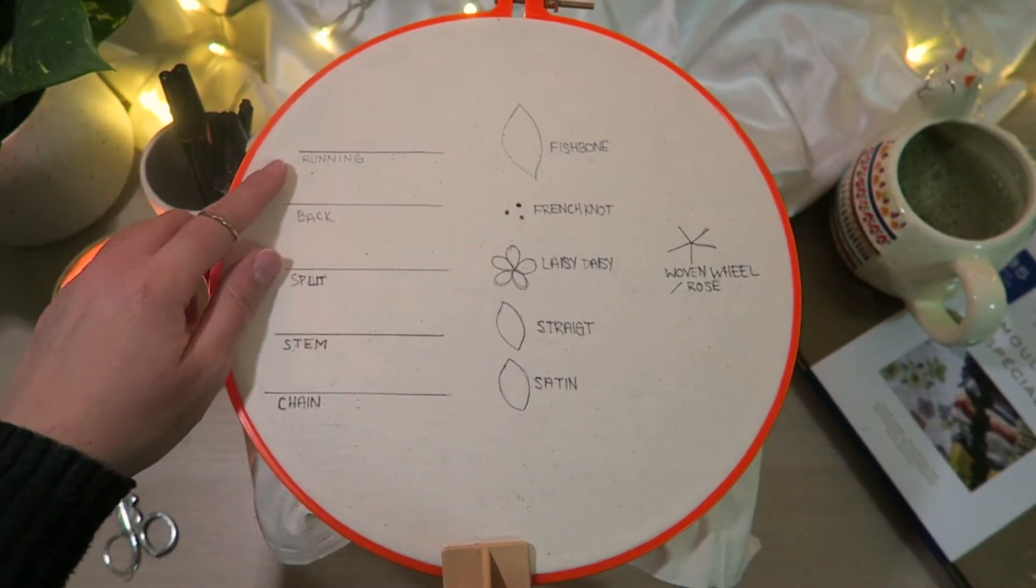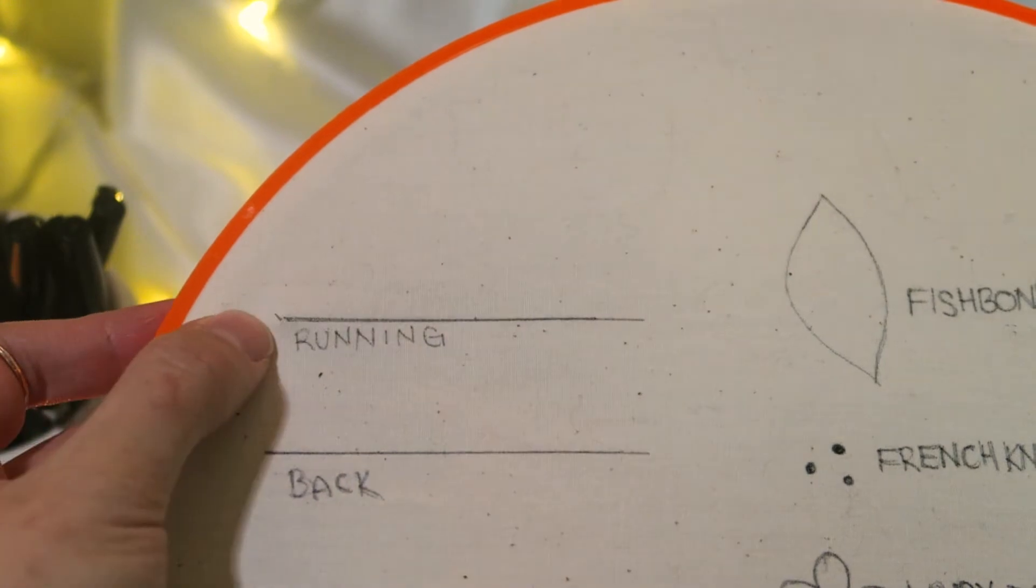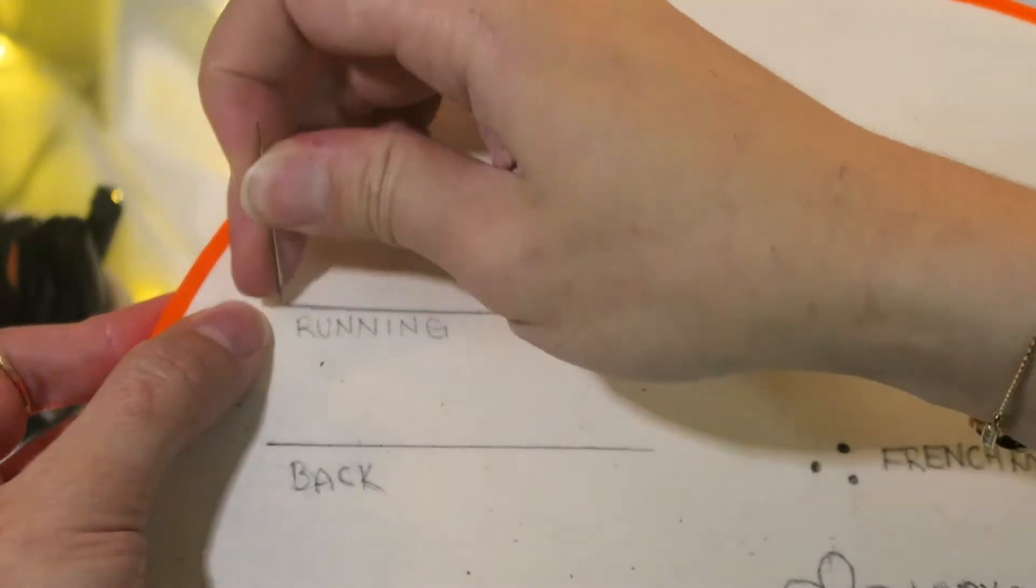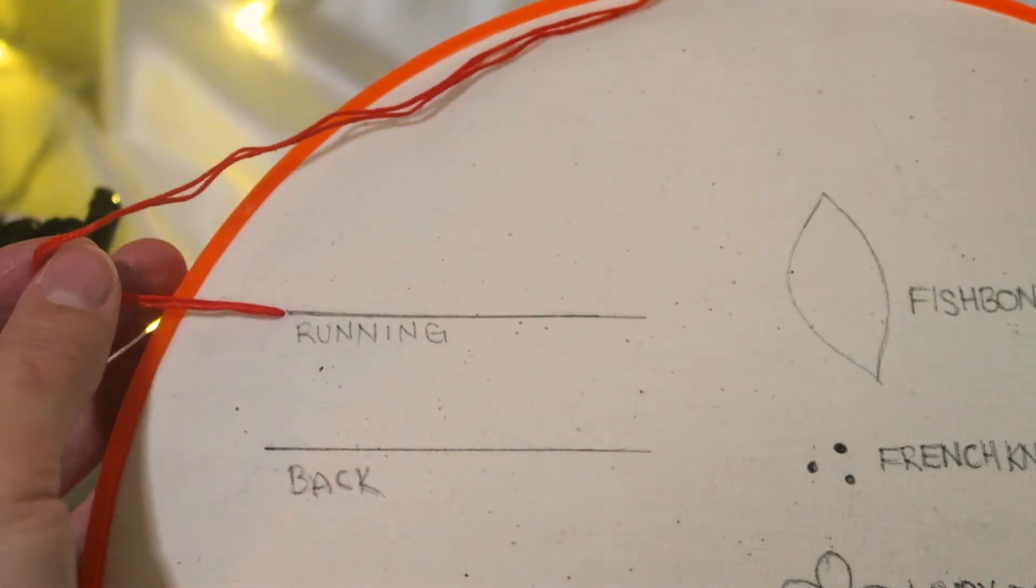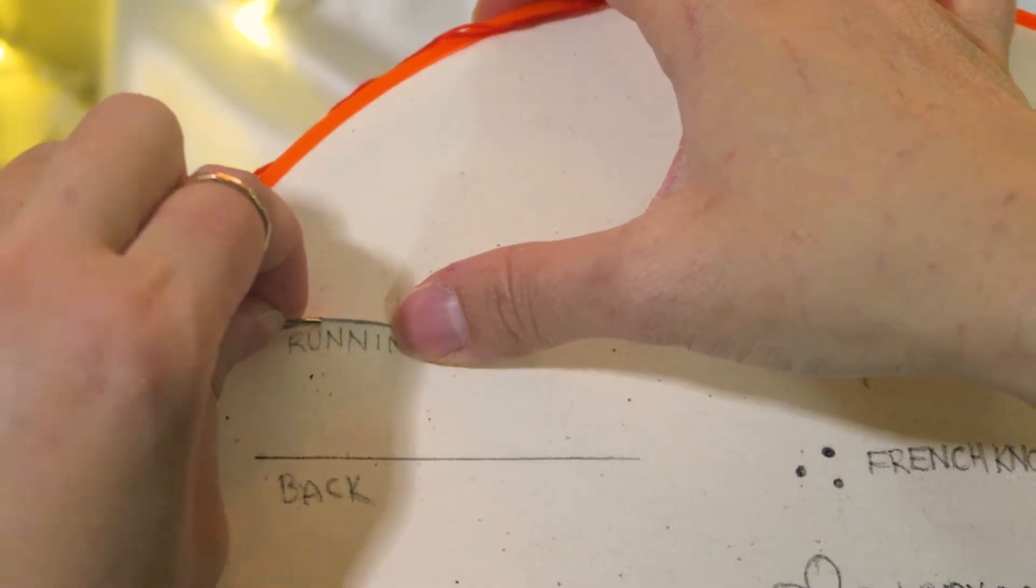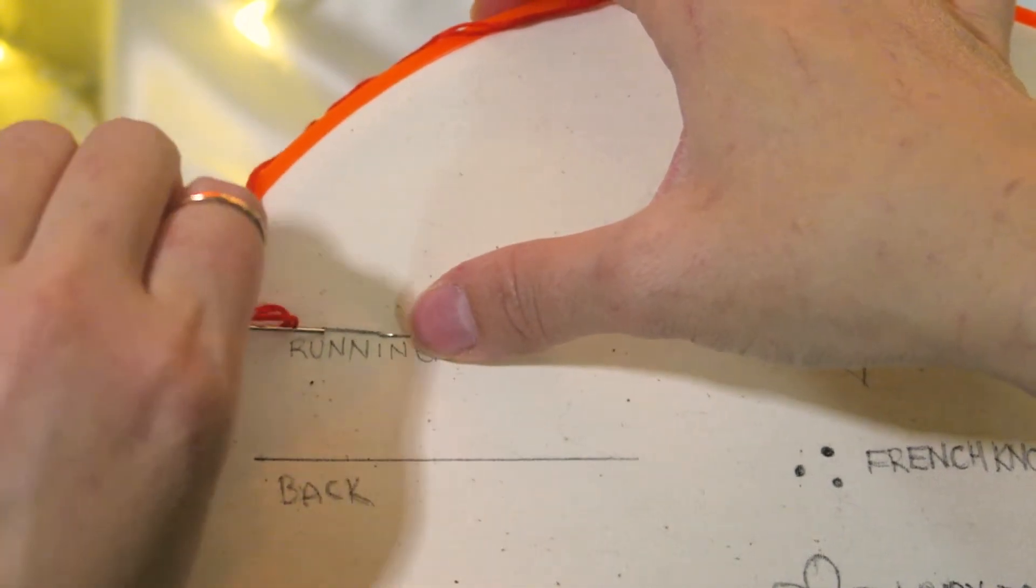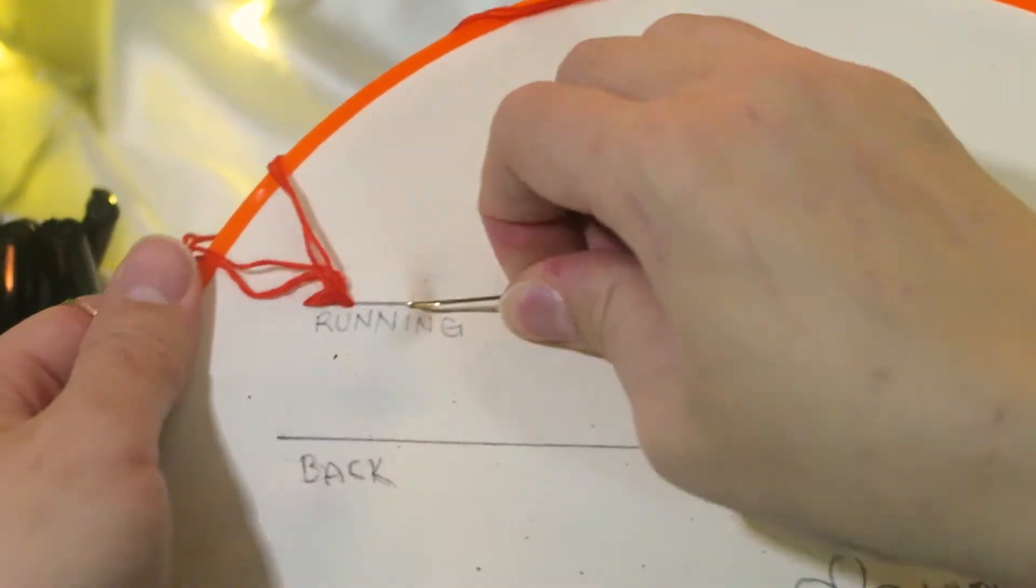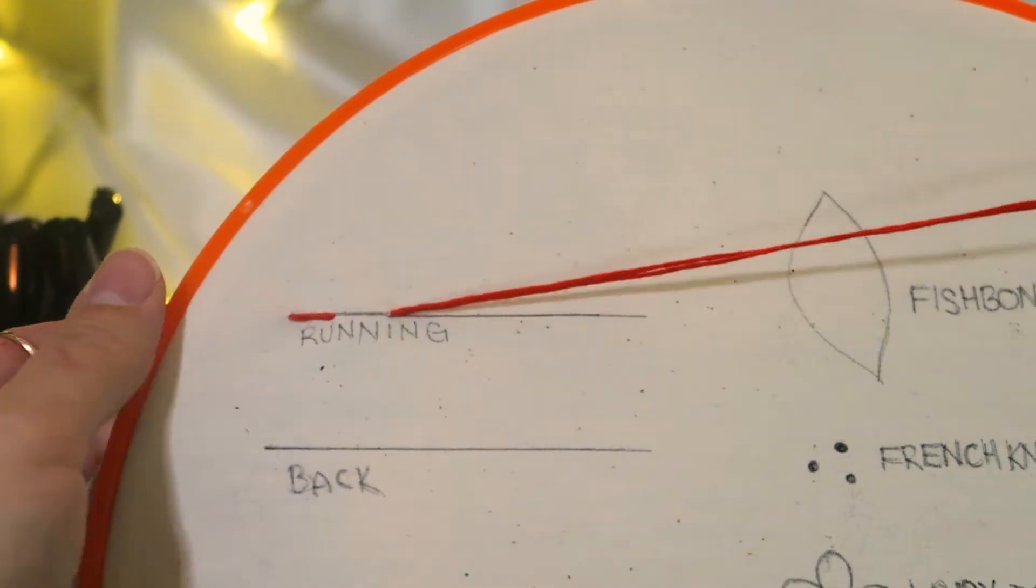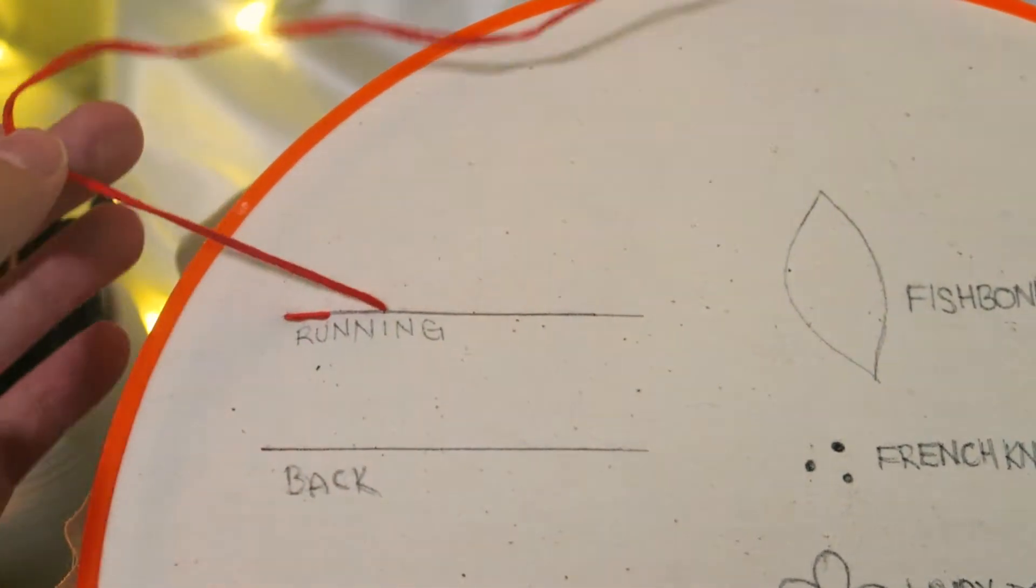Our first stitch is the running stitch. We're going to start at the back of the hoop and pull the needle and thread all the way to the front. You are then going to thread back through and weave your needle through the fabric. The distance between the stitches all depends on what you prefer. Just repeat this weaving process until you're done.